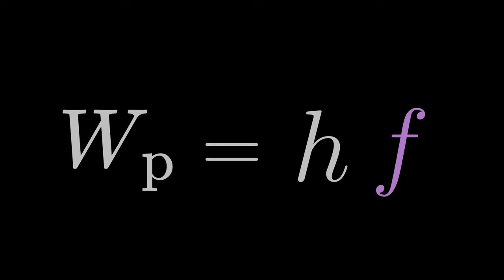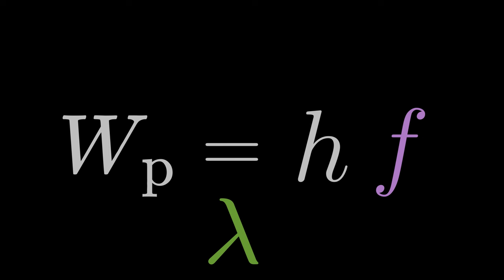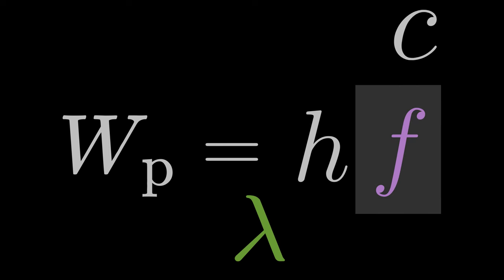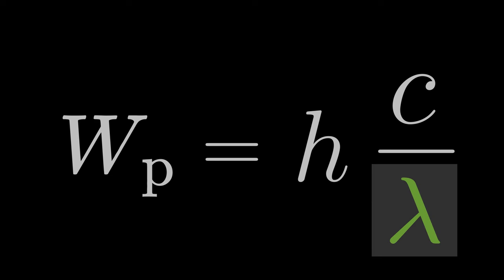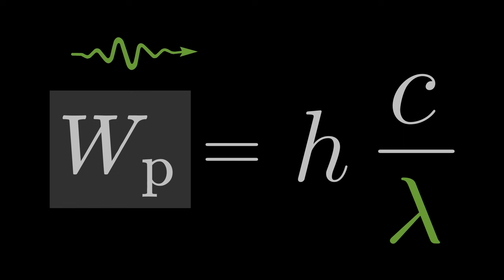We can also express the photon energy, Wp, with the wavelength. To do this, we replace F with C by lambda. We can conclude that the longer the wavelength of the light, the lower the energy of the photon.